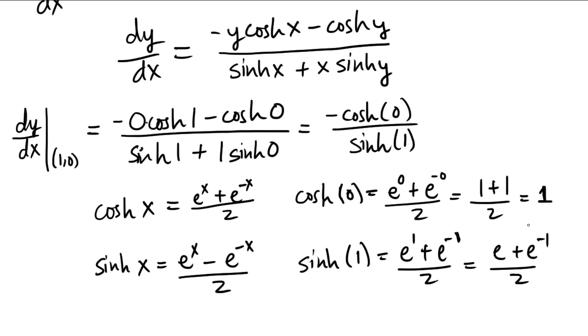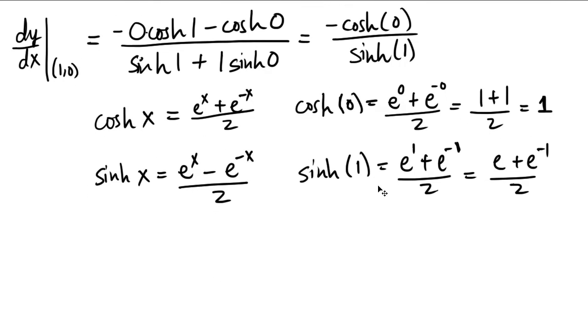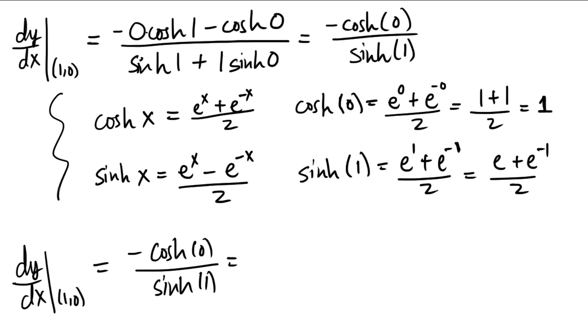So the way we're going to make progress to finish this question is just to plug in these values into my expression up here. So finally, the derivative at point (1,0) is equal to, like we saw up there, minus cosh(0) over sinh(1). And the reason we went through this discussion is so that we know what to put in for those values now. Cosh(0), as we figured out, is just equal to 1. Sinh(1), as we figured out, is this expression, (e + e^-1)/2. Let's clean this up. This is the same thing as -1 times the reciprocal of that.